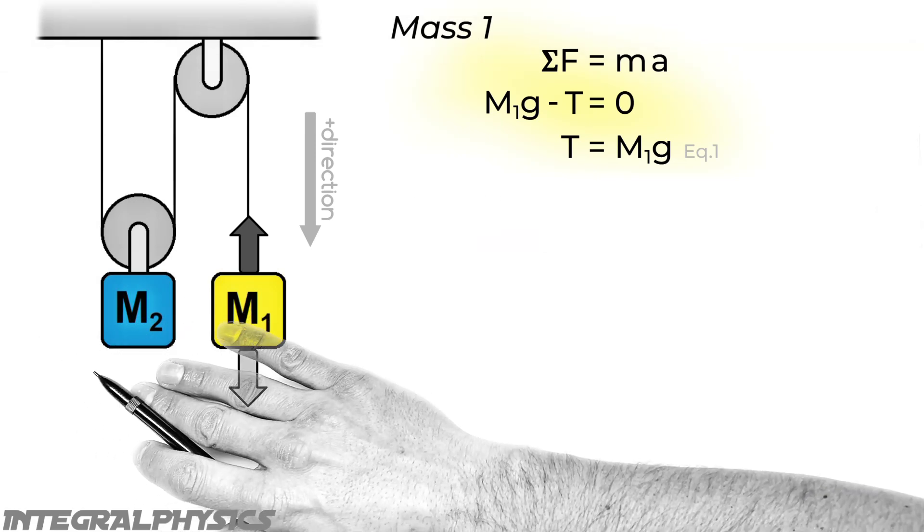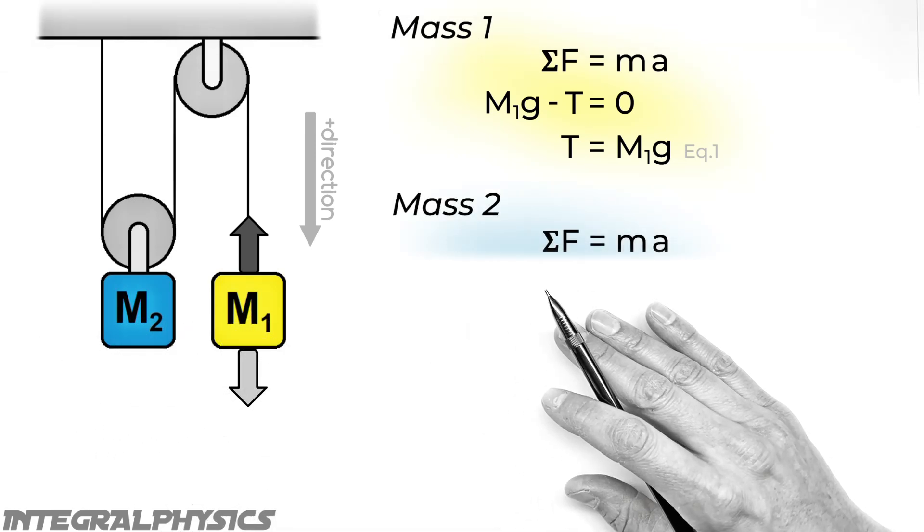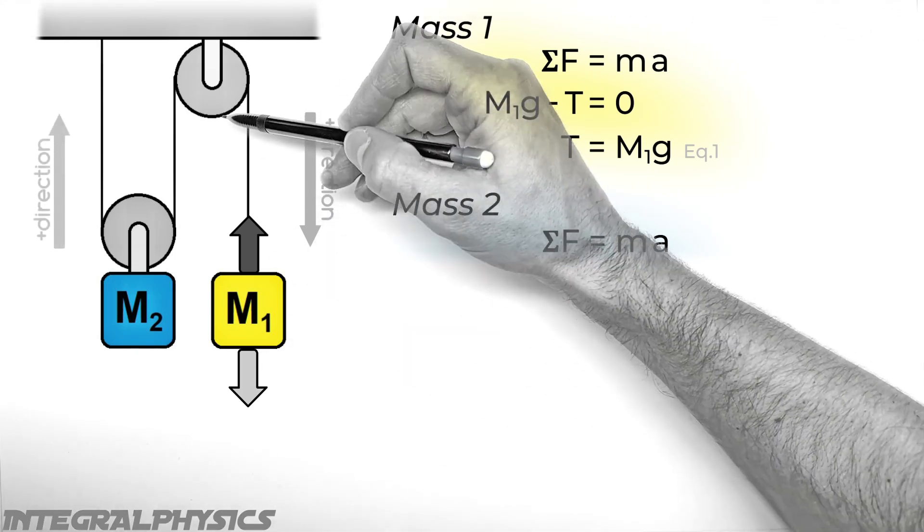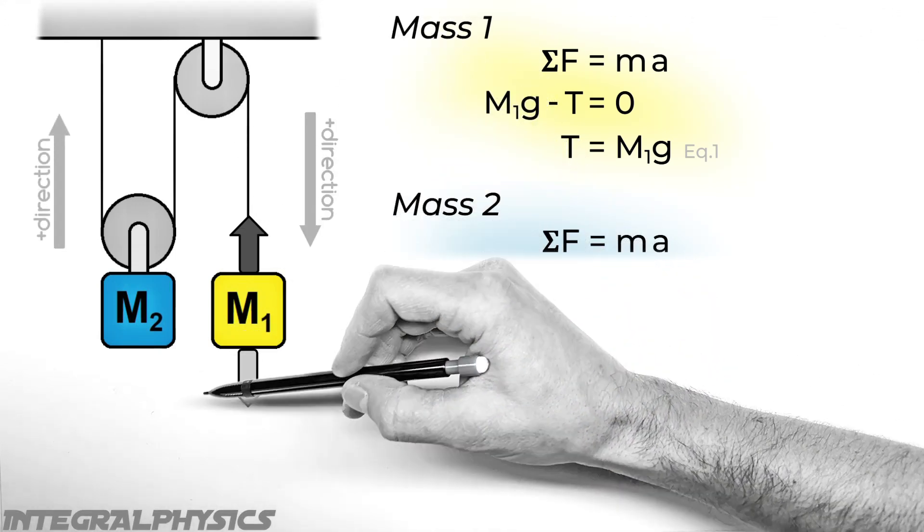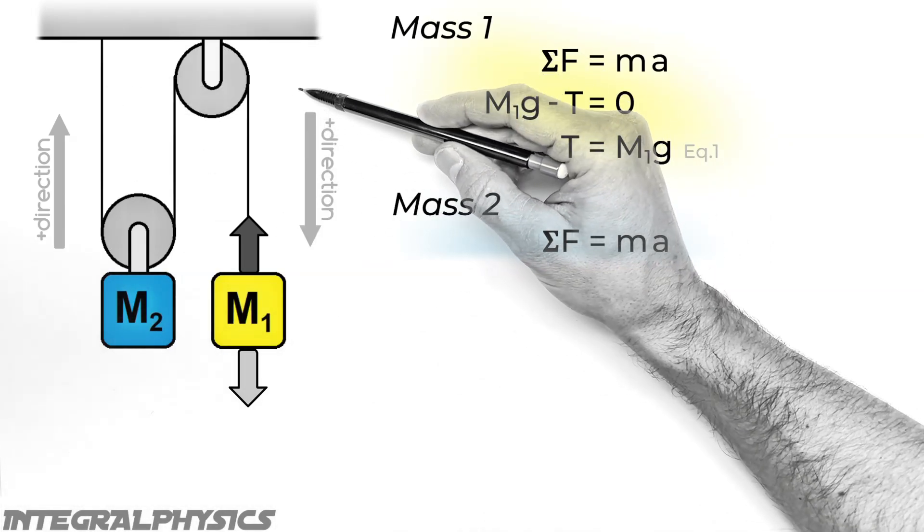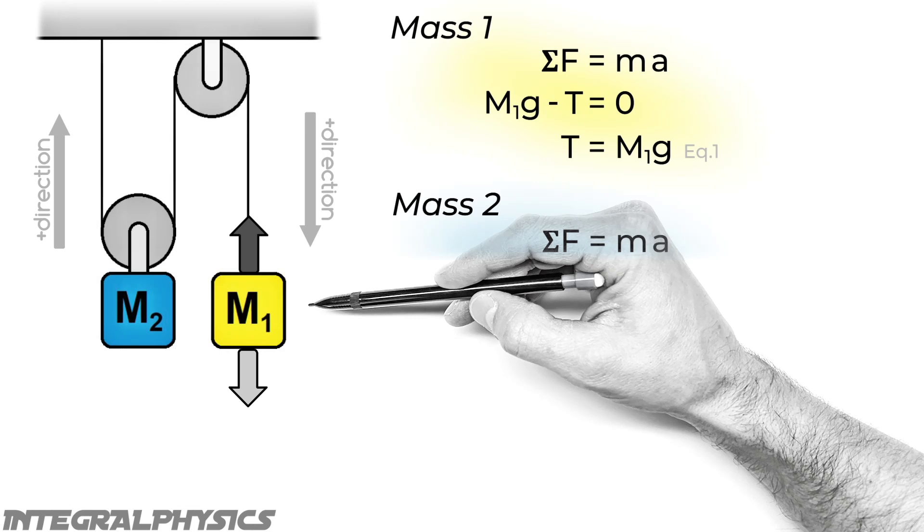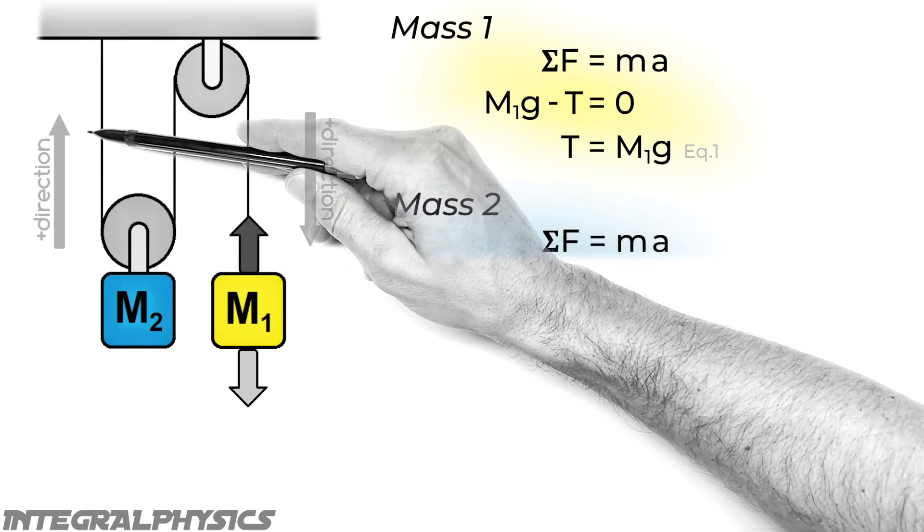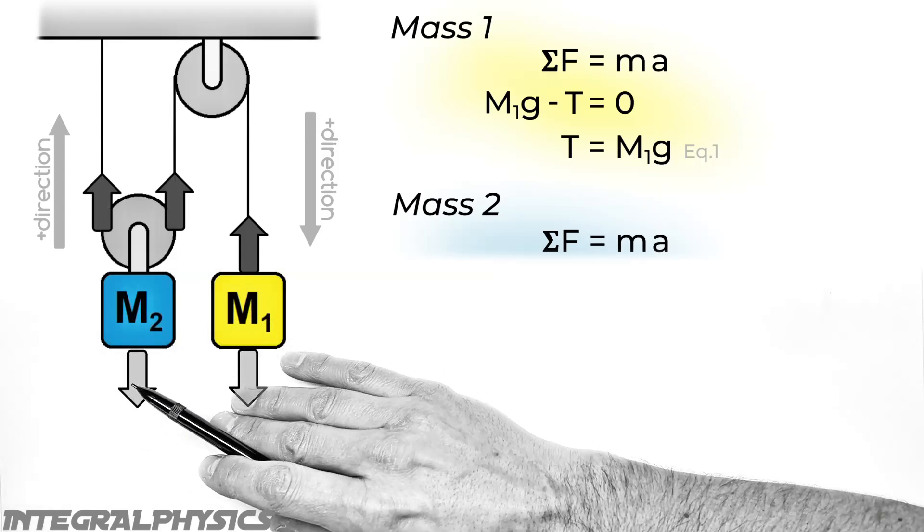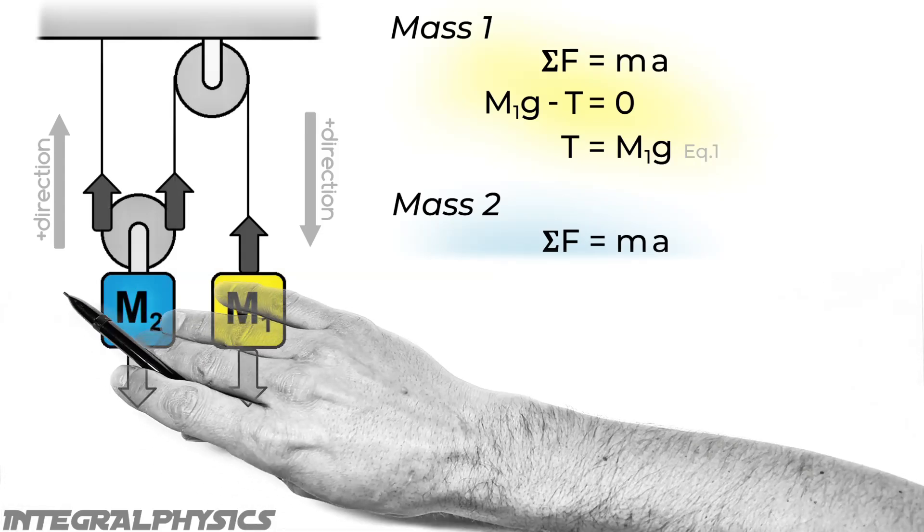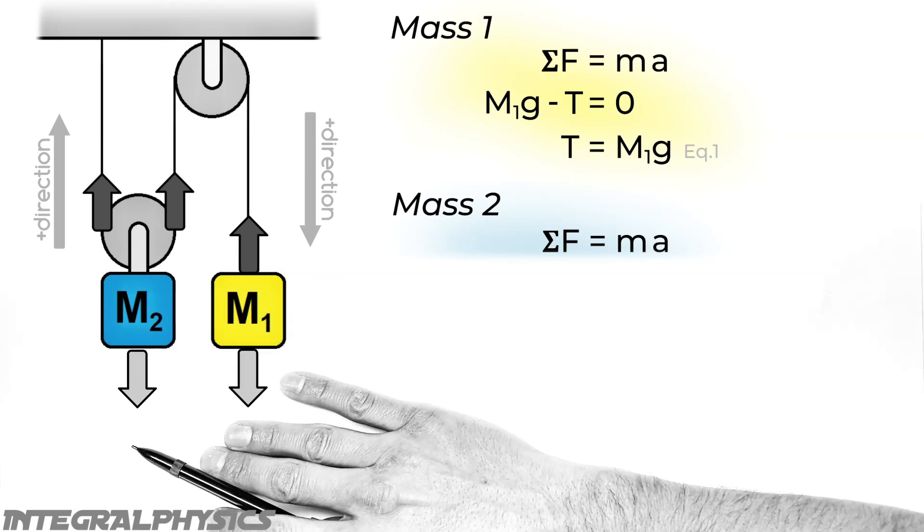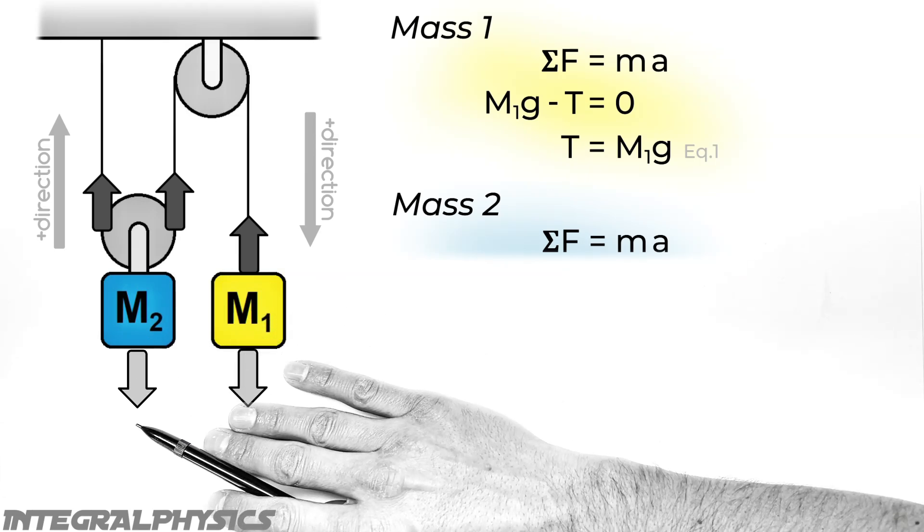Now turning to the second block here, we're again going to be applying Newton's second law. But we have to be careful with the positive direction here. You see the downward motion of this block here correlates to the upward motion of the second block. So if we say downward is the positive direction for M1, that means upward is going to be the positive direction for M2. And so looking at the free body diagram for this block, what we have is the tension acting twice on this mass M2 over here. And then we have gravity acting downward in the negative direction.